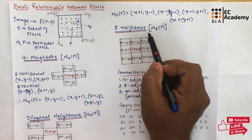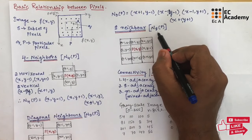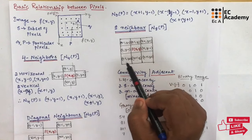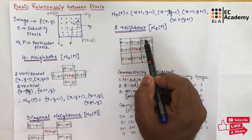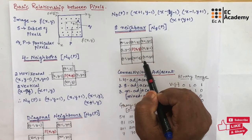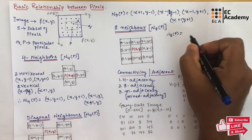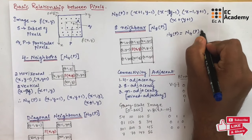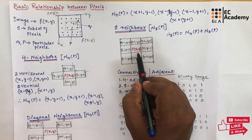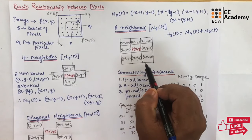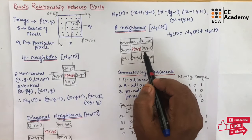Next we will see 8 neighborhood pixels, also known as 8 neighbors, represented as N8 of P. This is the combination of four neighbors and diagonal neighbors, so N8 of P equals N4 of P plus Nd of P. If we consider pixel P at x comma y, all surrounding pixels are 8 neighbors, all at unit distance from pixel P.